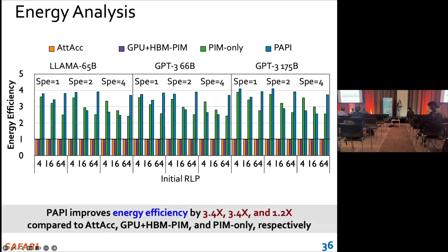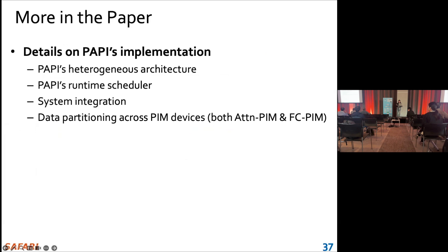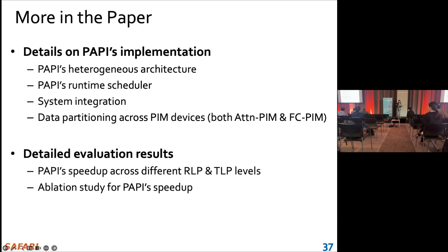This improvement is because the heterogeneous baselines executed all the FC kernels on energy-hungry A100 GPUs, while PAPI offloads part of these to FC PIM devices. We invite you to check our paper for more details on PAPI's implementation, such as heterogeneous architecture design, the runtime scheduler, more evaluation results, and area and power analysis to verify the design meets constraints.